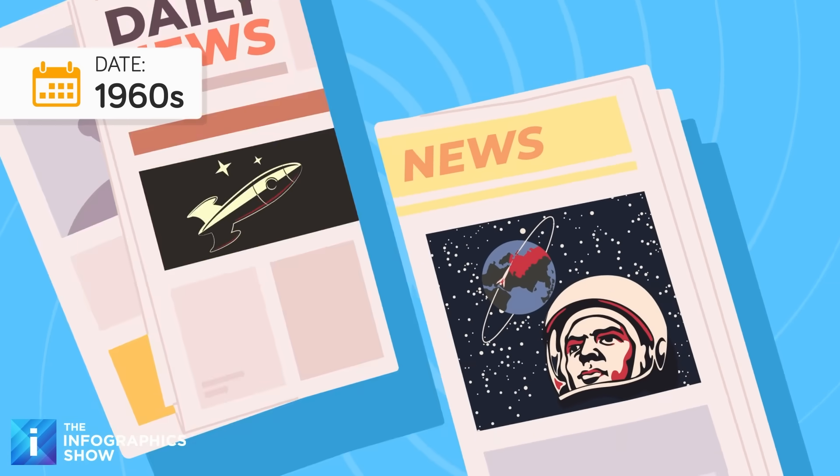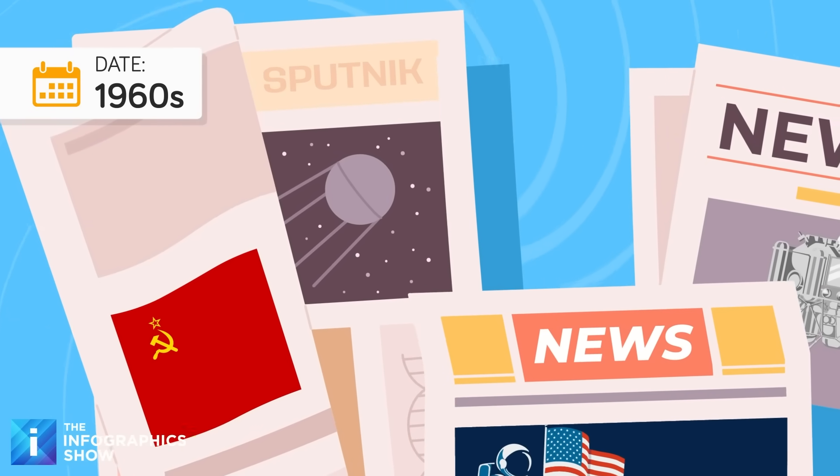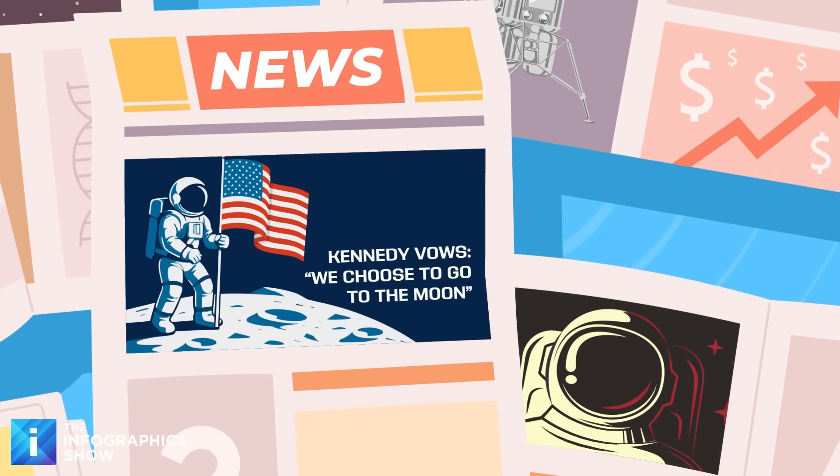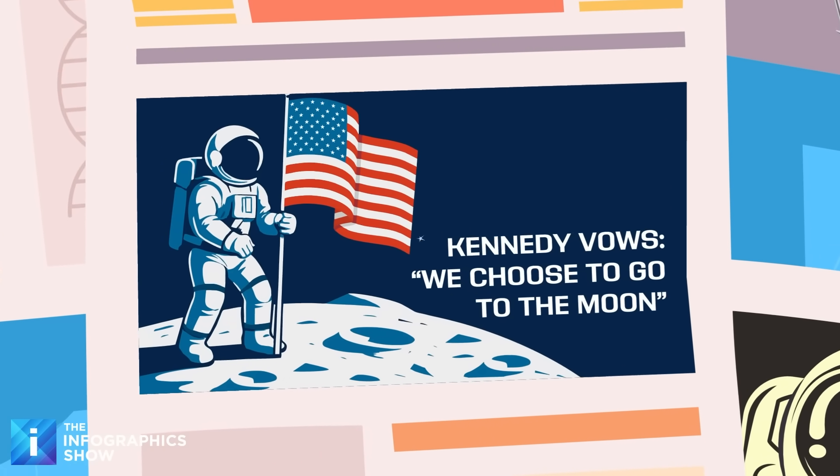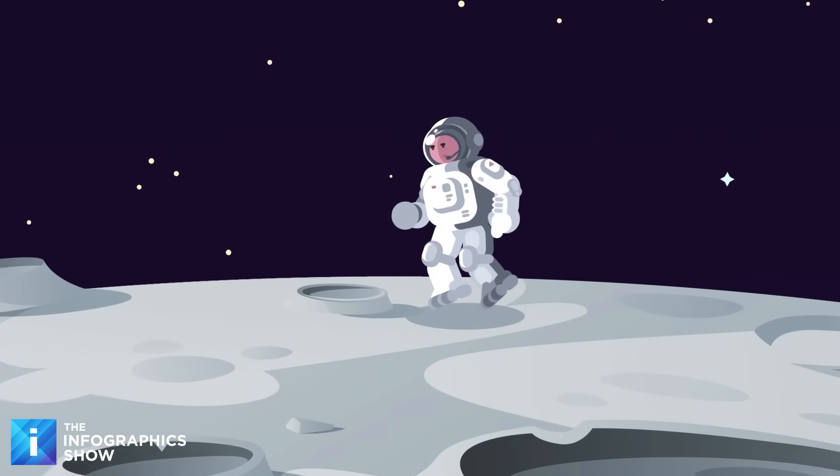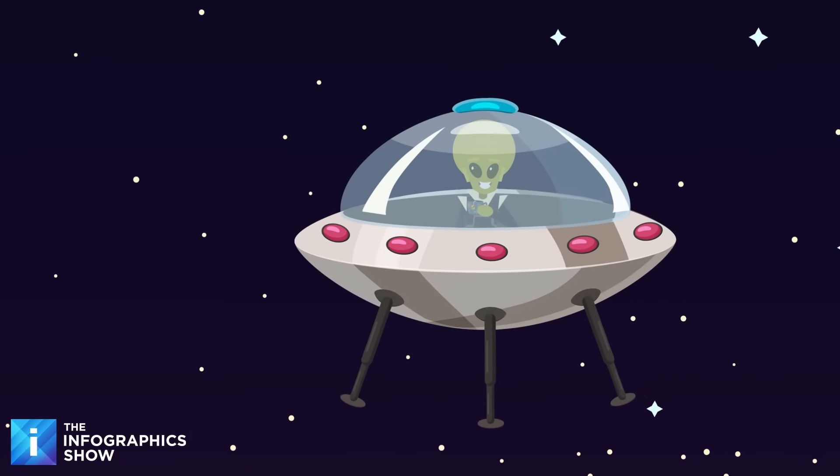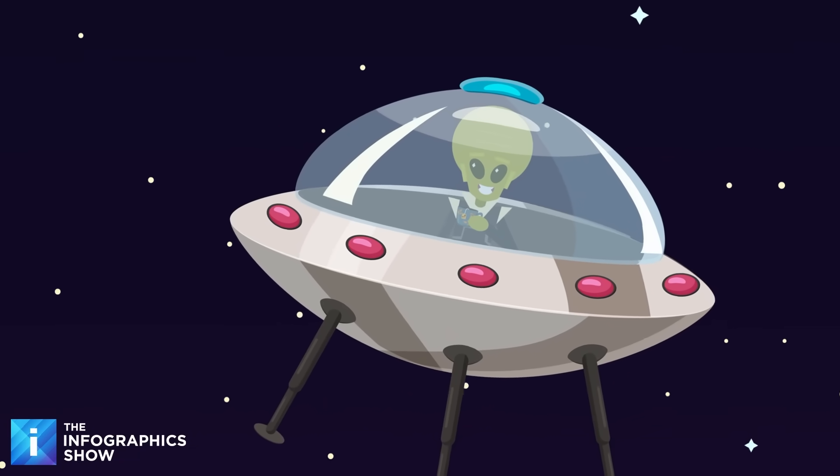By the 1960s, America was in the grip of space fever. The Soviets had launched Sputnik, Kennedy had planned to reach the moon, and NASA was pushing the limits of science and engineering. But while the official space program focused on lunar landings and astronaut safety, one subject remained conspicuously absent from public discussion - extraterrestrial life.